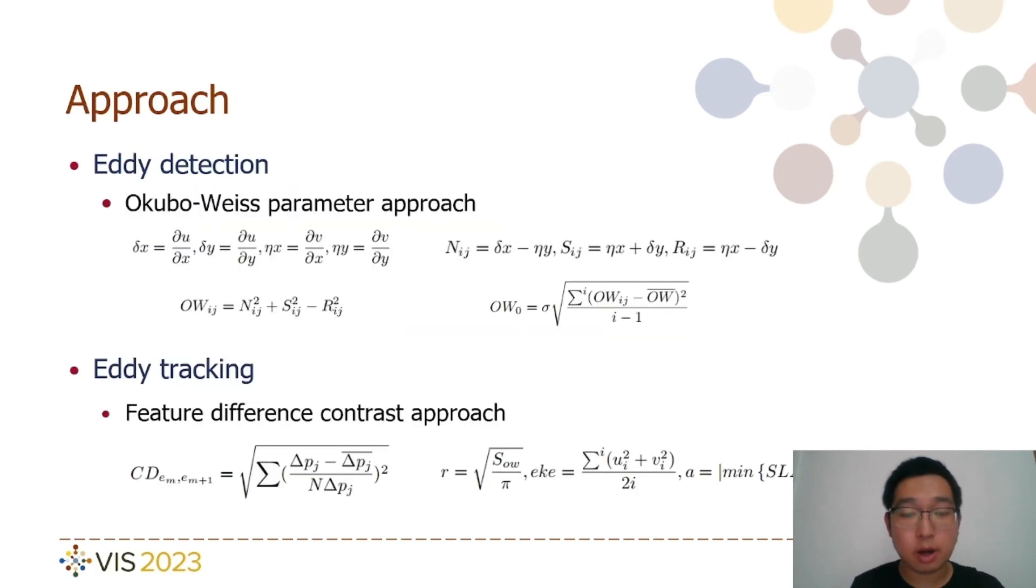Eddy detection primarily employs a physical feature approach, emphasizing physical and geometry characteristics, which is widely applied in oceanography. The specific approach utilized is the OW parameter algorithm. To implement this algorithm, it is necessary to define the normal component, shear component, and relative vorticity of the flow field at each coordinate i and for each time step t. Subsequently, partial derivatives of zonal velocity and meridional velocity in two directions are computed to derive the three physical components through linear combinations.